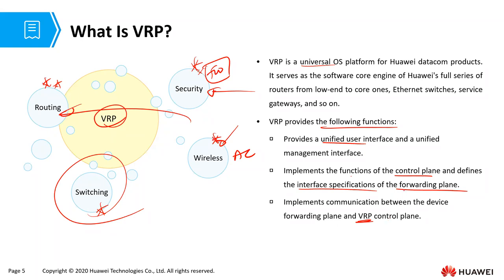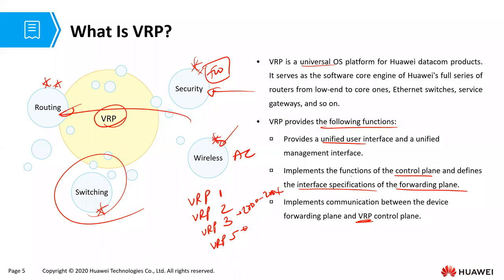VRP has come across different versions. We started with VRP version one — I also never saw that. Then VRP version two, which came out around 1999 to 2000. Then VRP version three, which was around 2000 to 2004. And then we went ahead to VRP version five, which most of our devices are still using now.